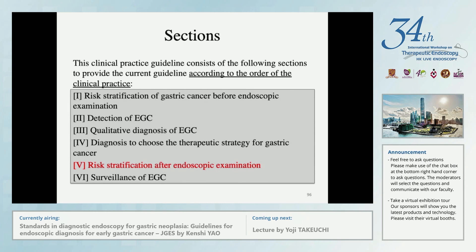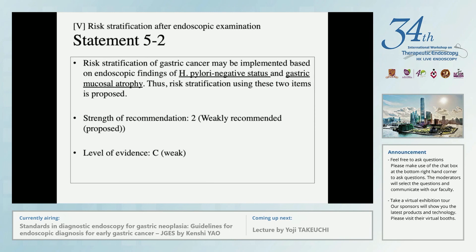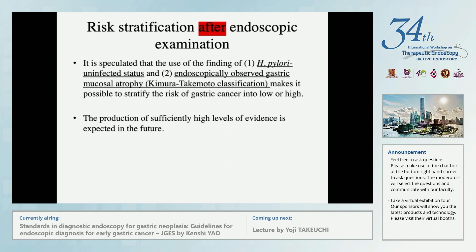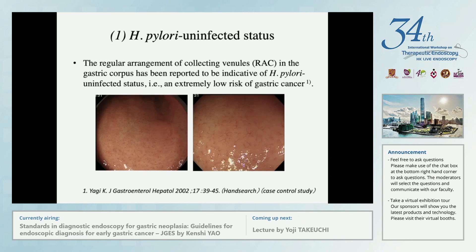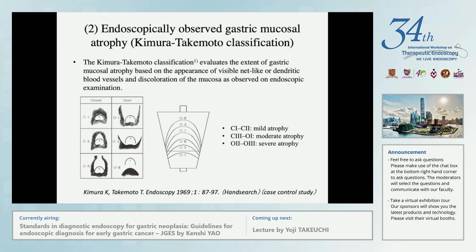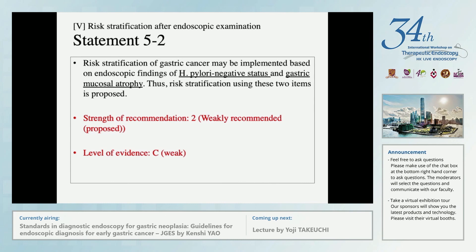Before the last topic: risk stratification after endoscopic examination. Risk stratification of gastric cancer may be implemented based on endoscopic findings of H. pylori negative status and gastric mucosa atrophy, and risk stratification using these two items is proposed. The Regular Arrangement of Collecting Venules (RAC) in the gastric corpus is a sign for negative H. pylori infection. This is also the famous Kimura-Takemoto classification. We recommend weakly; the level of evidence is C.